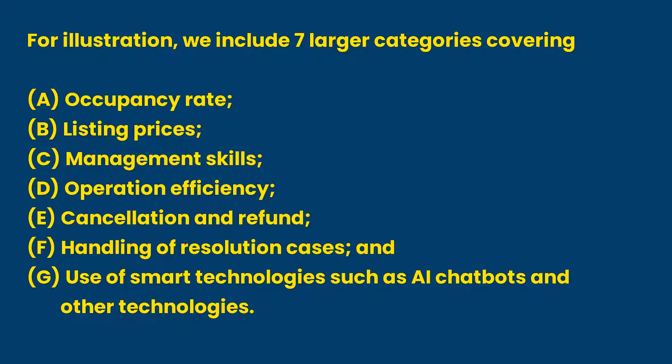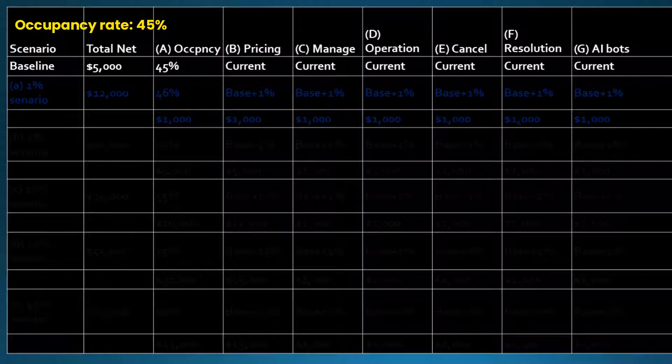We already have videos covering some of these topics and will have more to present in each category. According to many sources, the short-term rental market is tough recently for various reasons. Here we assume that we have an Airbnb service operating at a 45% occupancy and having annual revenue of one hundred thousand dollars. The annual profit is five thousand dollars. This is certainly not an ideal operation.